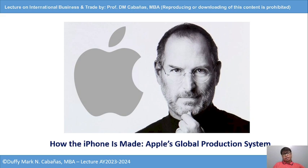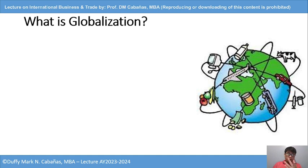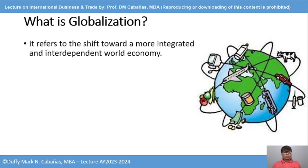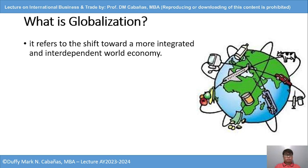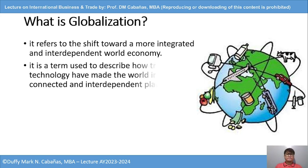We discussed last time this very basic concept in our study of international business and trade. When we want to fully understand what international business and trade is, we need to understand globalization. What is globalization? It refers to the shift toward a more integrated and interdependent world economy. It is a term used to describe how trade and technology have made the world into a more connected and interdependent place.